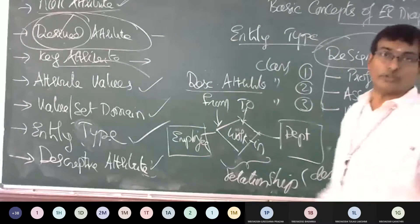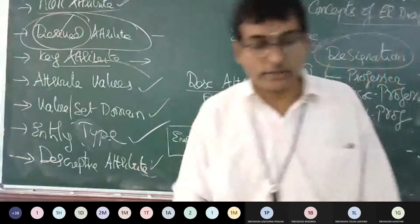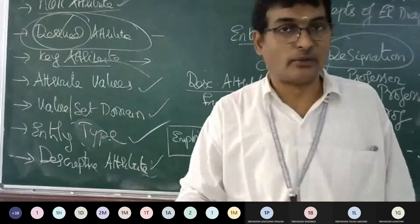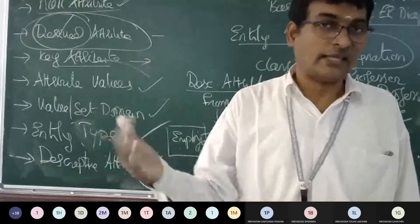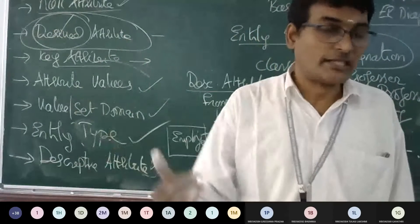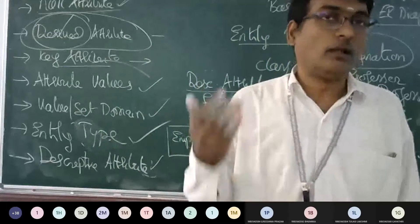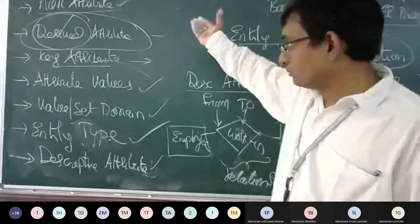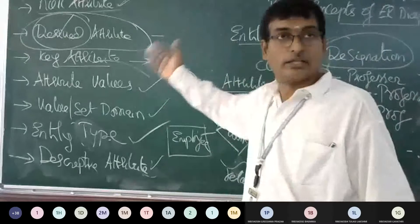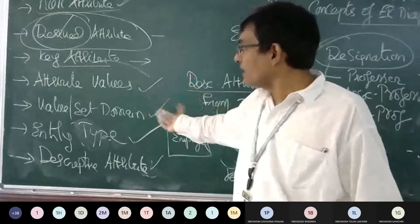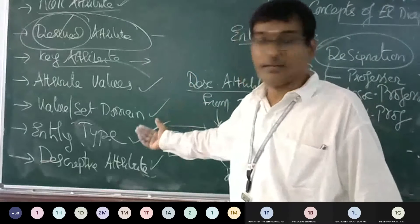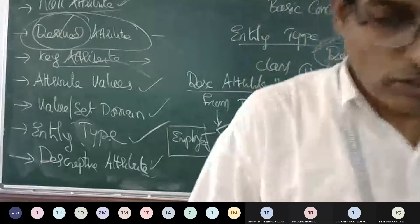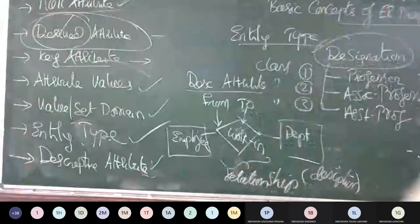So in today's class, we talked about different types of attributes: simple, single, multiple, null, derived, key, attribute values, value set domain, entity type, and descriptive attributes. That is all for today. Thank you.